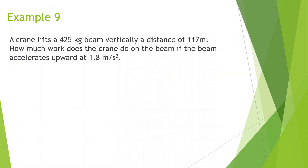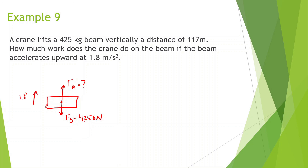A crane lifts a 425 kilogram beam vertically a distance of 117 meters. How much work does the crane do if the beam accelerates upward at 1.8 meters per second squared? The beam has a gravitational force of 4,250 newtons acting downward. We need to find the applied force using Newton's second law.